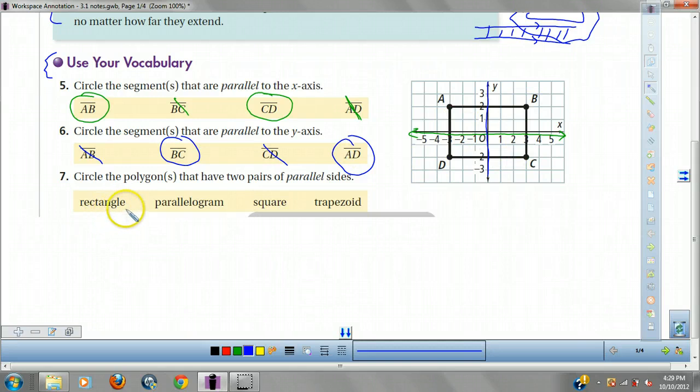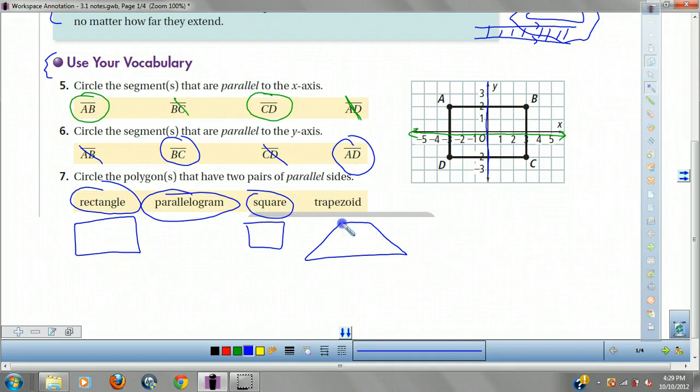Now let's try this one. Which polygons have two pairs of parallel sides? Rectangle? Would you say those are parallel? Yes. Parallelogram, I'm not going to draw that, because look, there's the word parallel in it. Square. Glorified rectangle, parallel. Trapezoid? No. These are parallel and these guys would cross. So no.